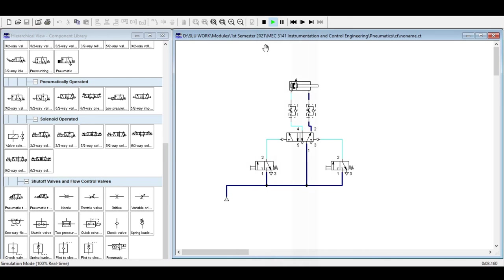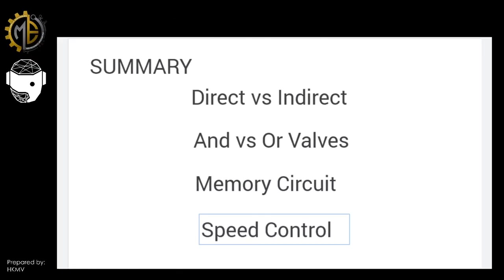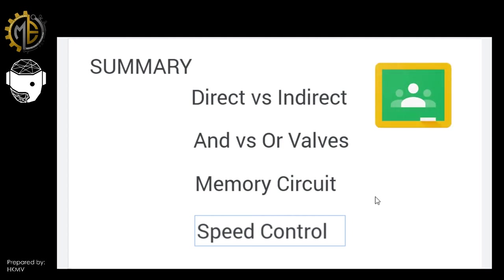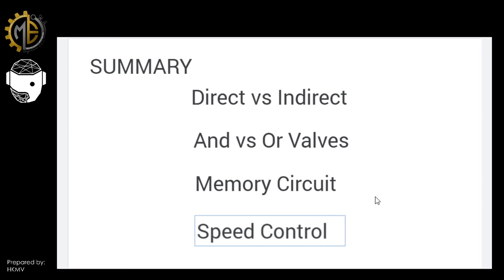In summary, we covered the difference between direct and indirect actuation circuits, the difference between AND valves (dual pressure valves) and OR valves (shuttle valves), the application of memory circuits, and how to use speed control with one-way flow control valves. If you have any questions, please comment below or message through Facebook. I hope you have learned something — thank you for listening, God bless.